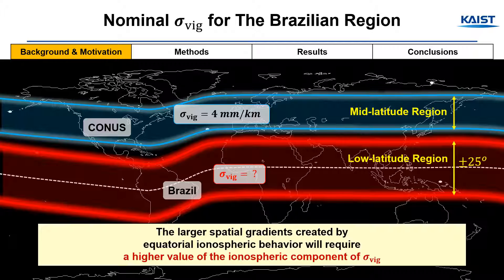In mid-latitude CAT-I GBAS operations, the value of sigma-vig has been determined to be 4 mm per kilometer. However, for the Brazilian region, the larger spatial gradients created by equatorial ionospheric behavior will require a higher value of the ionospheric component of sigma-vig. Therefore, the goal of this study is the assessment of nominal daytime sigma-vig over Brazil to reflect low-latitude ionospheric conditions.